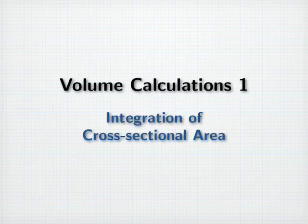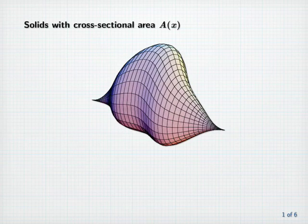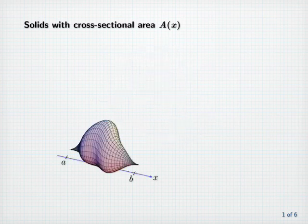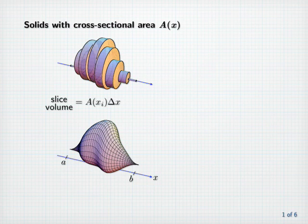Volume Calculations 1: Integration of Cross-sectional Area. Consider a solid whose cross-sectional area is given by a function A of some variable x. Assume that we can define a coordinate axis along which the area of cross-sections perpendicular to that axis is a function of position along the axis. Then we can imagine approximating the solid with layers whose volumes are given simply by cross-sectional area times thickness delta x.